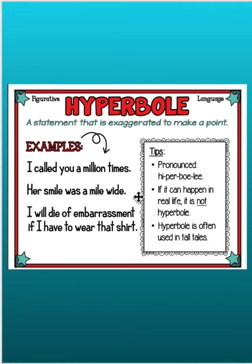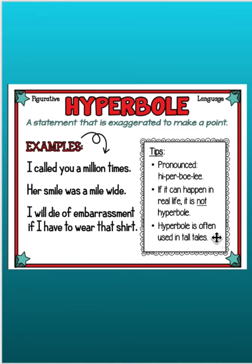Her smile was a mile wide. And finally, 'I will die of embarrassment if I have to wear that shirt.' So this person is not literally going to die, but it's great to exaggerate, and you can think of how horrible it would be for this person. So you will identify the sentence that has the hyperbole or the phrase that is exaggerated. Have fun with this, fifth graders. They're often great in tall tales and just to use in writing. They're often humorous as well, and it's a great way to make our writing more exciting.